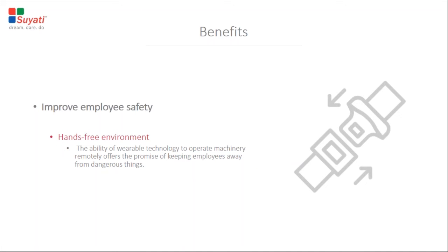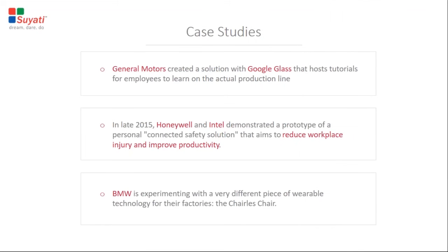Now we will look at some case studies where wearables are actually being tested and used to improve the production process. General Motors has created a solution with Google Glass that hosts tutorials for employees to learn on the actual production line. General Motors focused on using technology to improve training — they worked with Plex Systems to integrate a solution hosting tutorials for employees on the actual production line. GM is also experimenting with Google Glass as a way to improve the repair process, enabling employees to easily snap photos of a broken machine and share it without using their hands. In late 2015, Honeywell and Intel demonstrated a prototype of a personal connected safety solution that aims to reduce workplace injury and improve productivity.